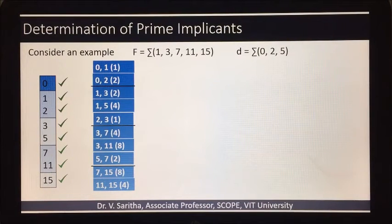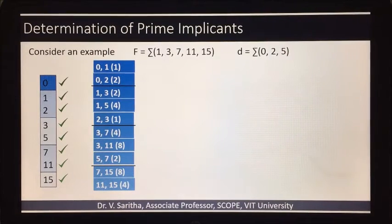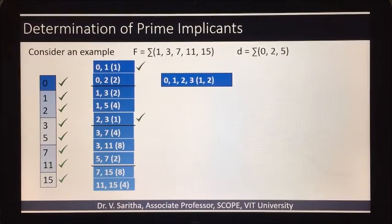So we have formed pairs using the given min terms and also the don't care conditions. Now we have to form the quads. If you see the first and second groups, difference 1 is there, so 0,1,2,3 we can compare them.